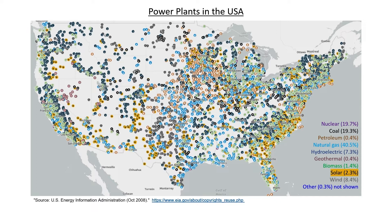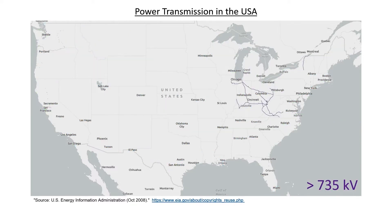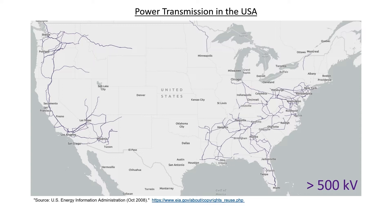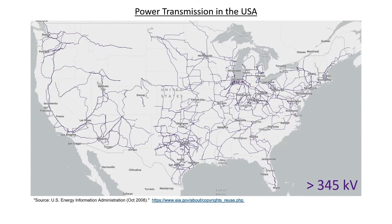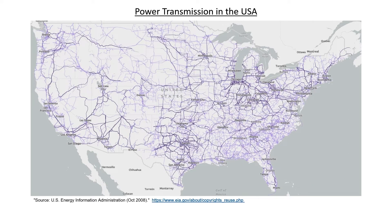Let's now take a look at the transmission lines that run through the United States. We already know that it makes a lot of sense to transmit power at very high voltages because the line losses are less. Let's see where we have power lines of various voltages, starting with the high voltages and working our way down. Here are those very high voltage lines — 735 kilovolts and higher. Now we include those higher than 500 kilovolts, then 345 kilovolts, 220 kilovolts, and finally the others at 66 kilovolts and up.